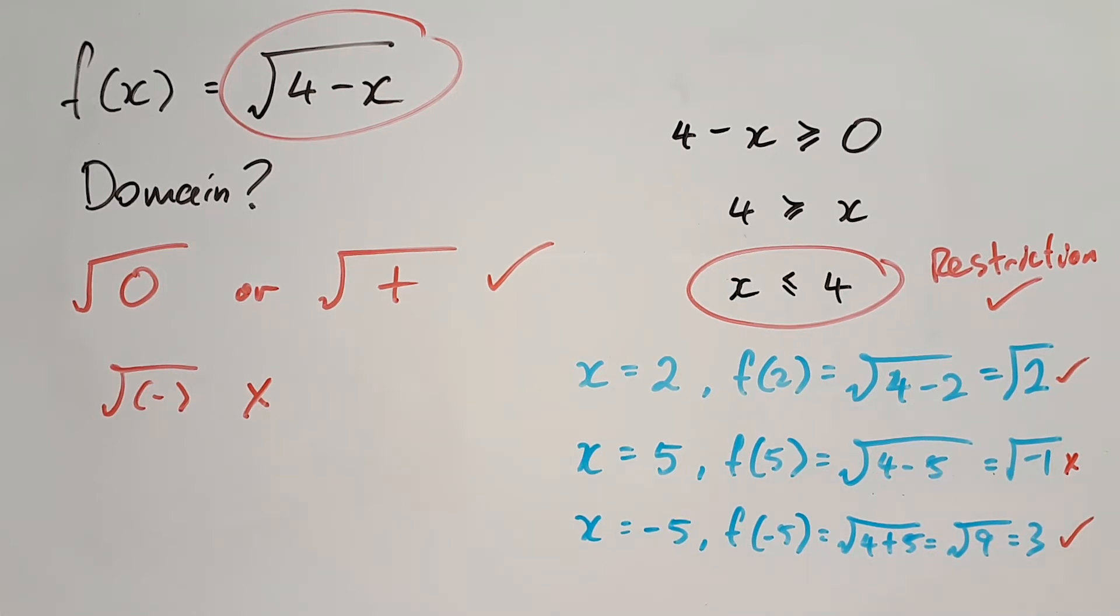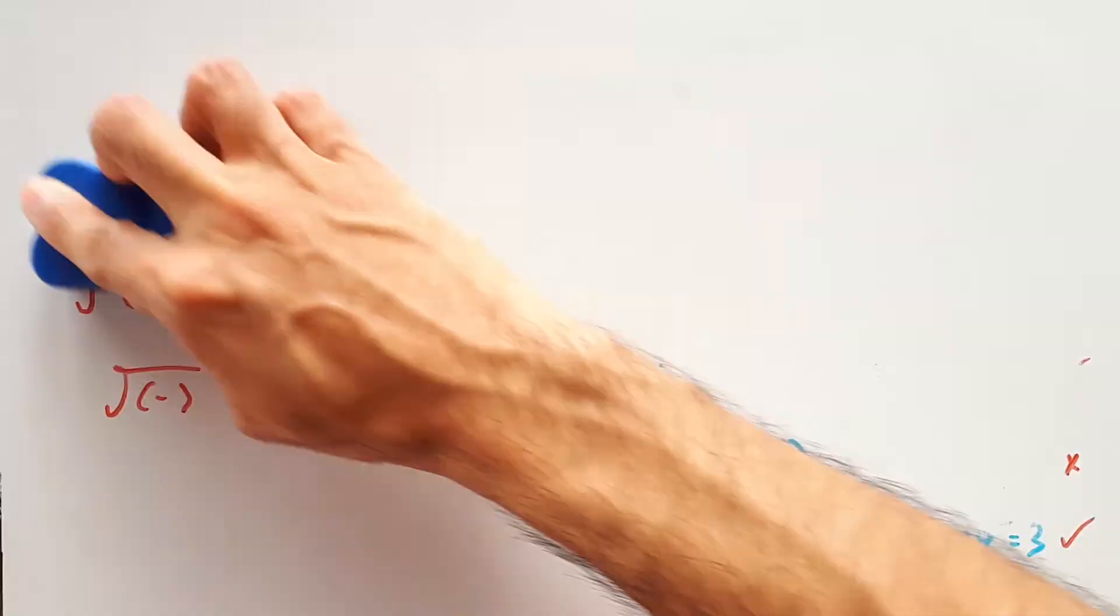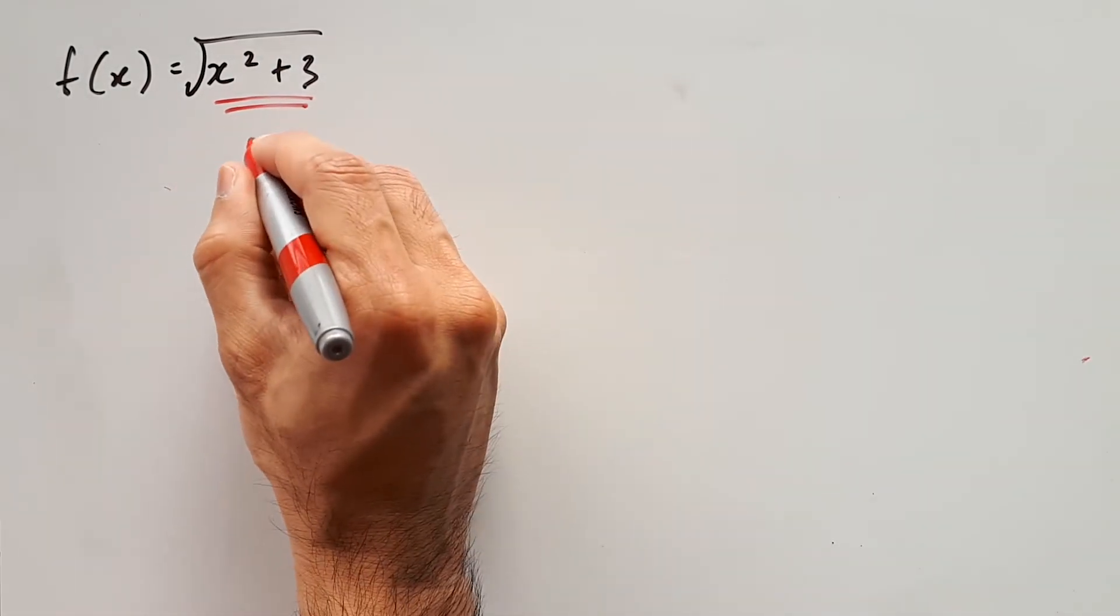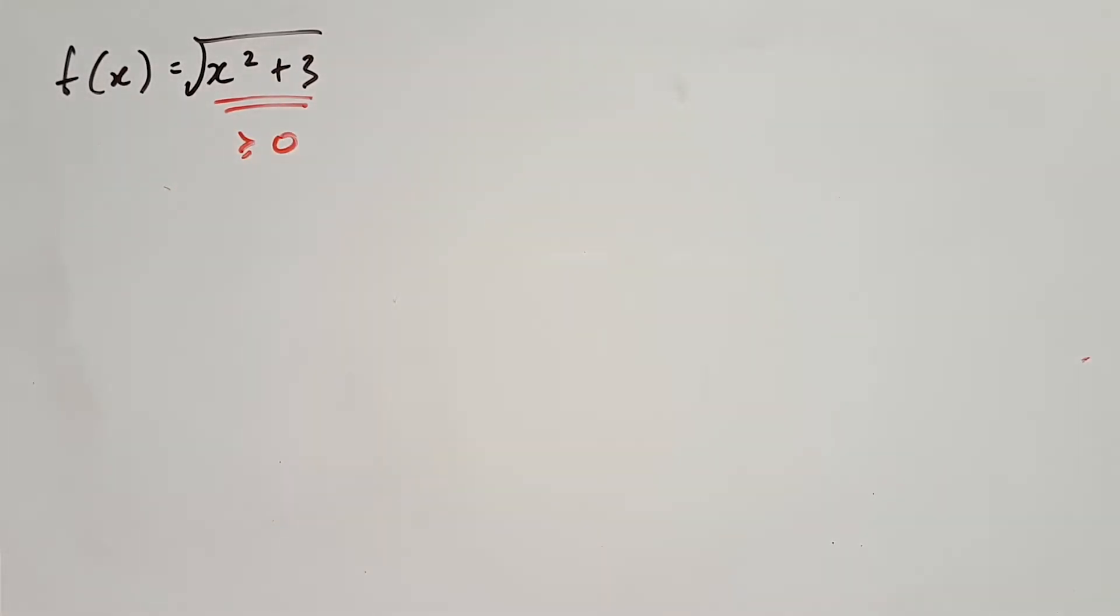Okay, let's check out this next question, which may or may not have a restriction. So in the case of this square root function, we need the inside to be 0 or positive. So we set x squared plus 3 greater than or equal to 0.